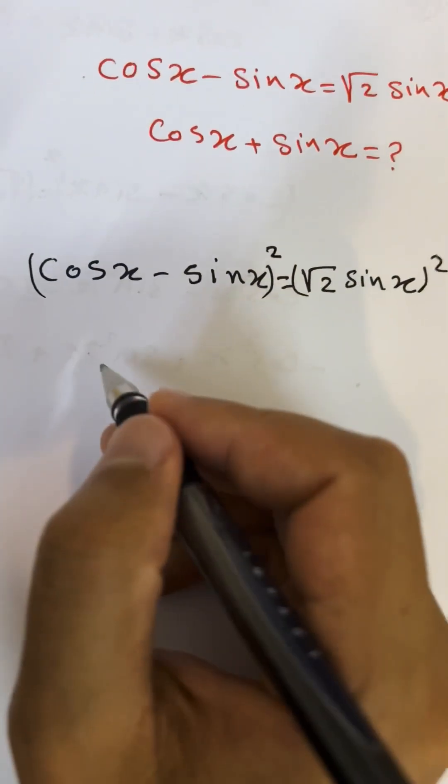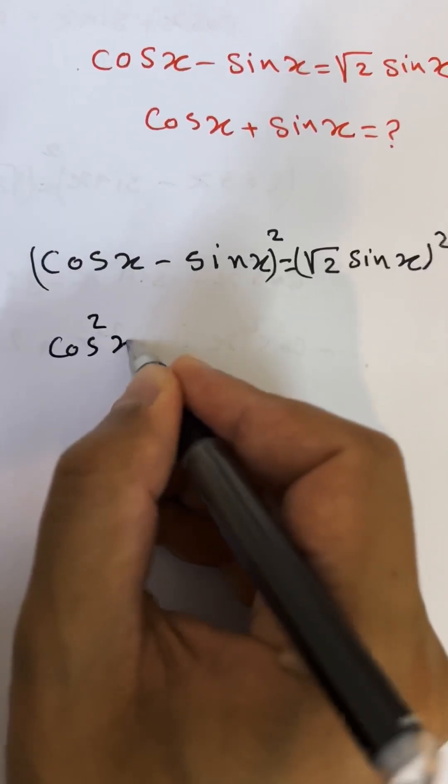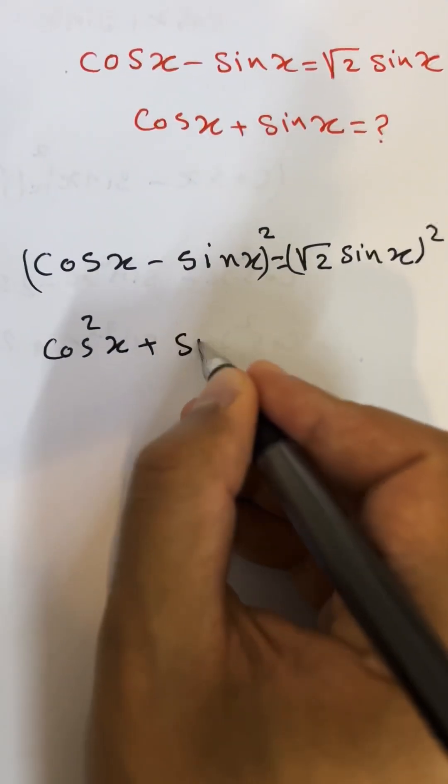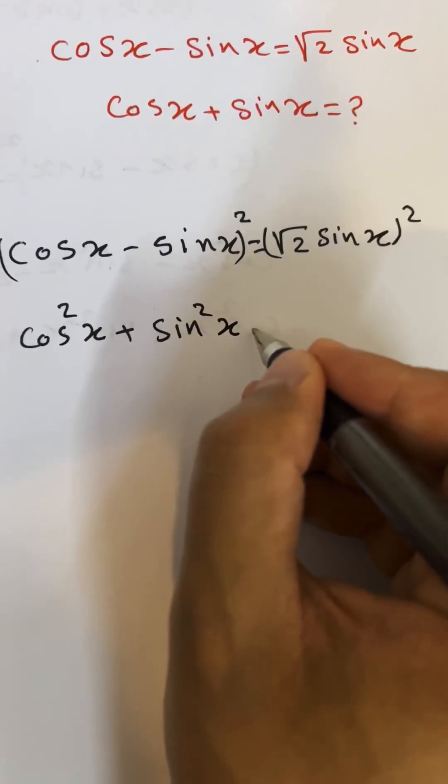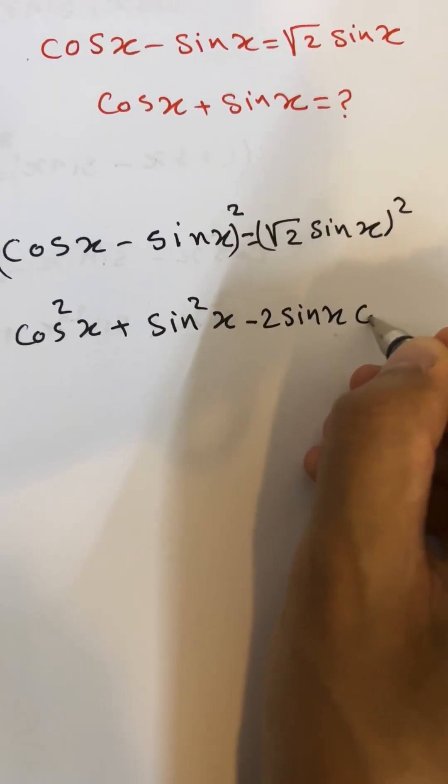After we square this one, it will be: cosine squared x plus sine squared x minus 2 sine x cosine x.